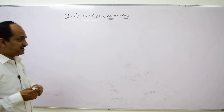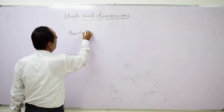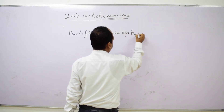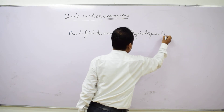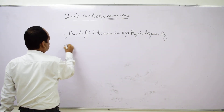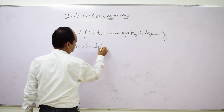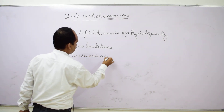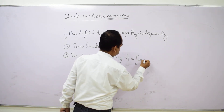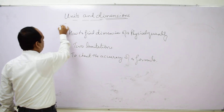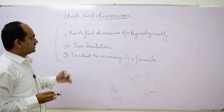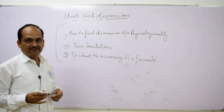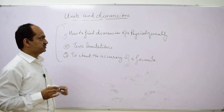In this segment we studied how to find dimensions of a physical quantity, two limitations of dimensions, and how to check the accuracy of a formula using dimensions. In the next segment, we will learn how to convert one system of units into another and how to derive a formula using dimensions.